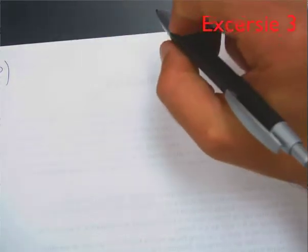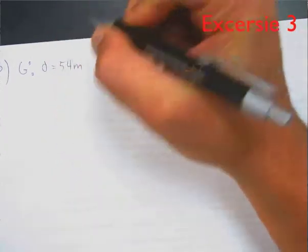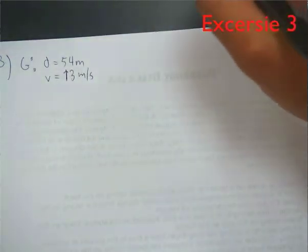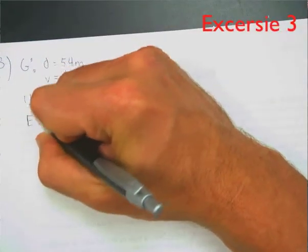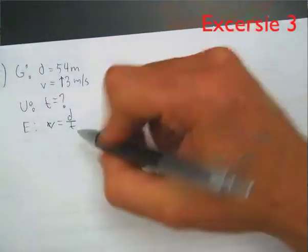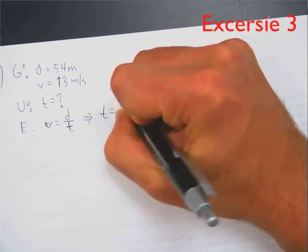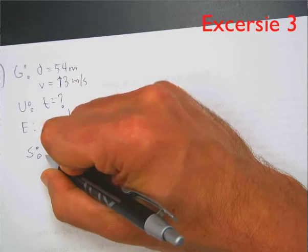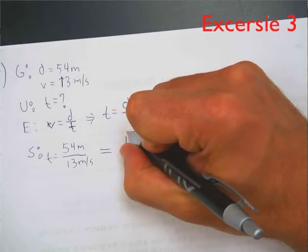For number 3, we set up our givens: a distance of 54 meters and a velocity of 13 meters per second. Our unknown is how long — time. Our equation starts as V equals D over T, and we do the switcheroo with V and T, so time equals distance over velocity. We substitute: 54 divided by 13 meters per second. The meters will cancel out, leaving us with seconds as our answer.